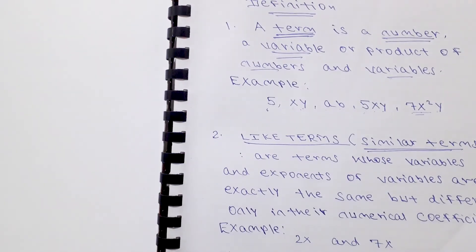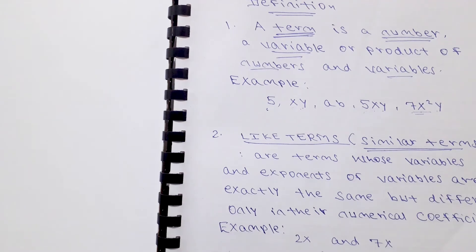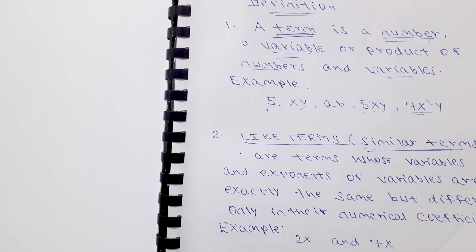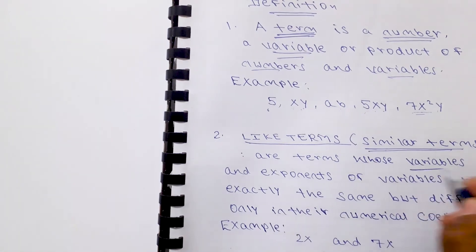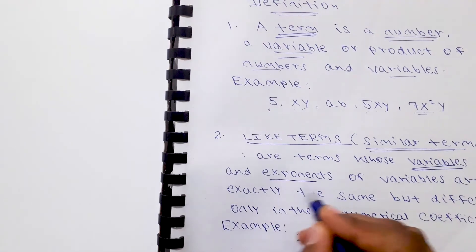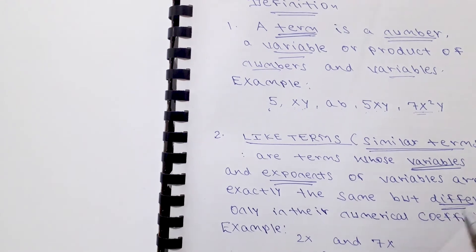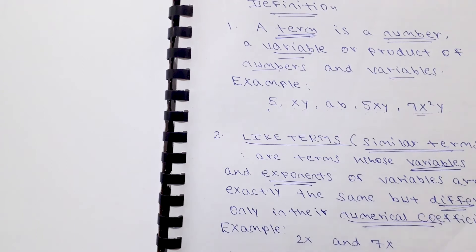Now the definition of like terms. In other references, they are called similar terms. A like term, or similar term, is a term whose variables and exponents of variables are exactly the same, but differ only in their numerical coefficient.